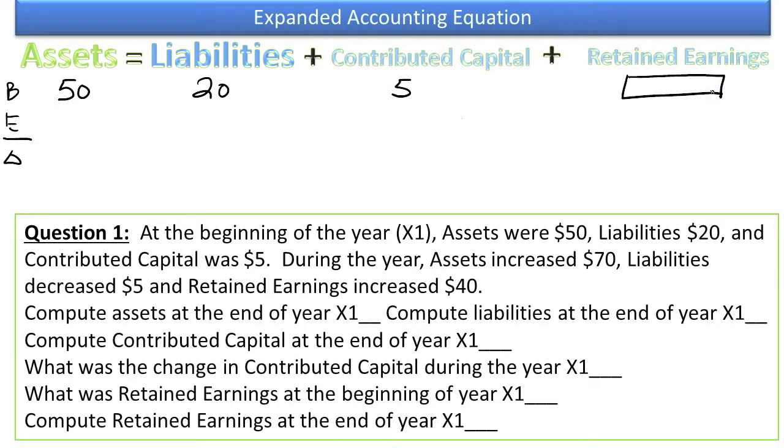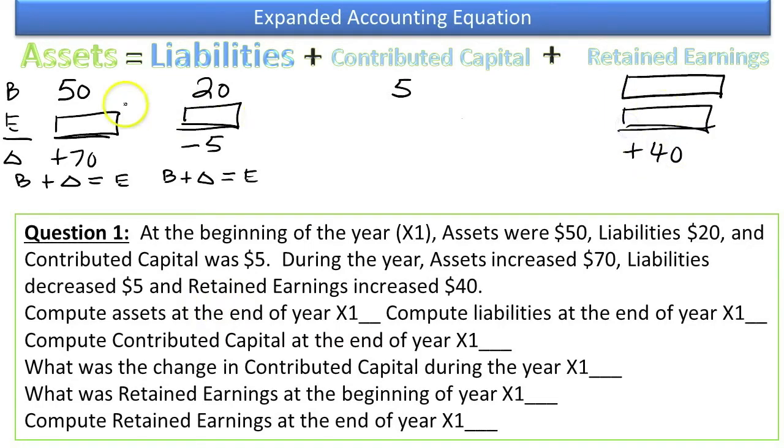During the year, assets increased by $70. So they went from beginning plus the change equals the ending, and the ending is something we don't know yet. Liabilities decreased by $5, so they went down by $5. So we had a beginning, we had the change, now this is actually going to be a minus 5, equals ending, and we don't know the ending. Retained earnings increased by $40. Now in this case, we don't know the beginning or the ending, so we'll have to use the expanded accounting equation working horizontally to solve for that. That's really all we've been given, so these others we also don't know: ending contributed capital and the change in contributed capital.